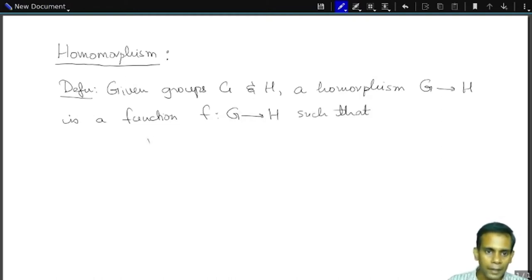Namely, F of G1, G2 is F of G1 times F of G2 for all G1, G2, and G.